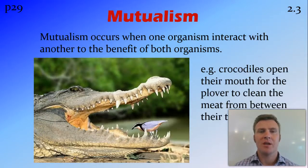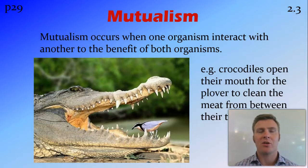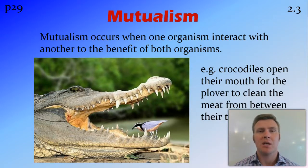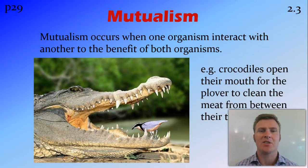The next one is mutualism, where two organisms interact for mutual benefit — so both benefit from the relationship. A nice example is the crocodile: after a crocodile has had a feed, it opens its mouth wide and a plover comes in to pick the meat from between its teeth. The crocodile gets its teeth cleaned so the meat doesn't rot and decay them, and the plover gets a meal. Both organisms benefit from this relationship.